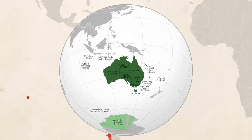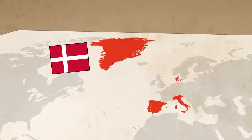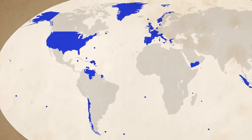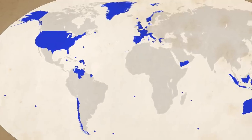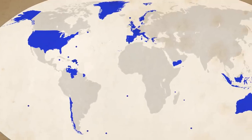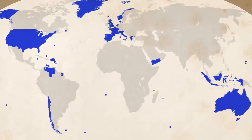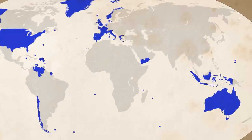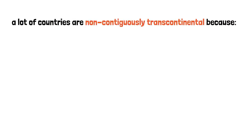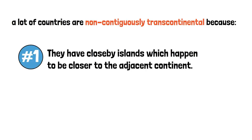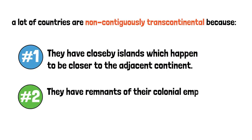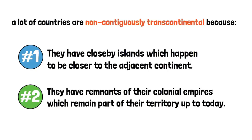Australia also has the Christmas and Cocos Islands, which are geographically associated with Southeast Asia. Denmark technically owns Greenland, a part of North America. The United States are transcontinental due to their island possessions in the Pacific. And Venezuela has islands which are part of the Caribbean and therefore exist in both South and North America. Indonesia currently controls Western New Guinea, which is culturally associated with Oceania and geologically a part of the Australian continental landmass. So a lot of countries are non-contiguously transcontinental because they have close nearby islands that happen to be closer to the adjacent continent, or they still control remnants of their former empires spread across the world.